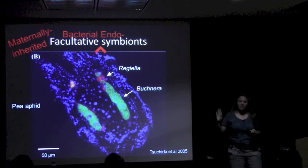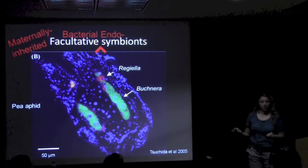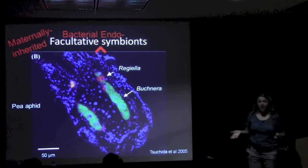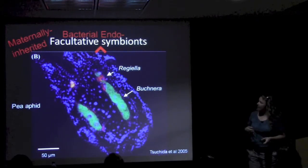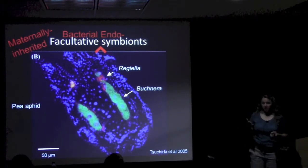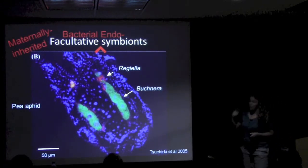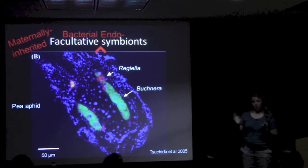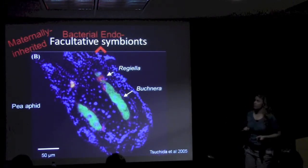So maternally inherited: if the mother has it, the offspring is very, very likely to have it as well. I'm only going to be talking about bacteria. There are certainly other symbionts — fungi, microsporidians — that fall into the same category, but I'm not going to be speaking about them today.